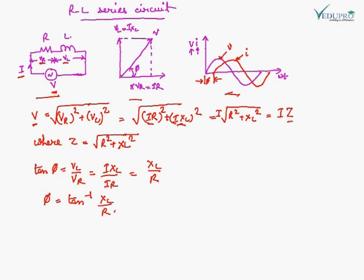From the phasor diagram, it is observed that the current lags behind the applied voltage by angle phi. To calculate phi, tan phi equals VL upon VR, so phi equals tan inverse of XL upon R. The values of L and R determine the phase lag.